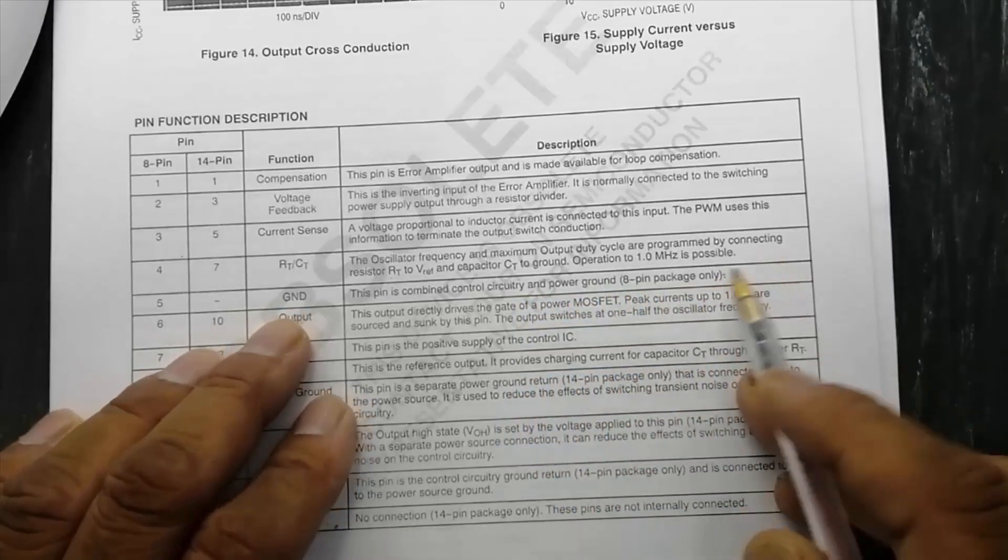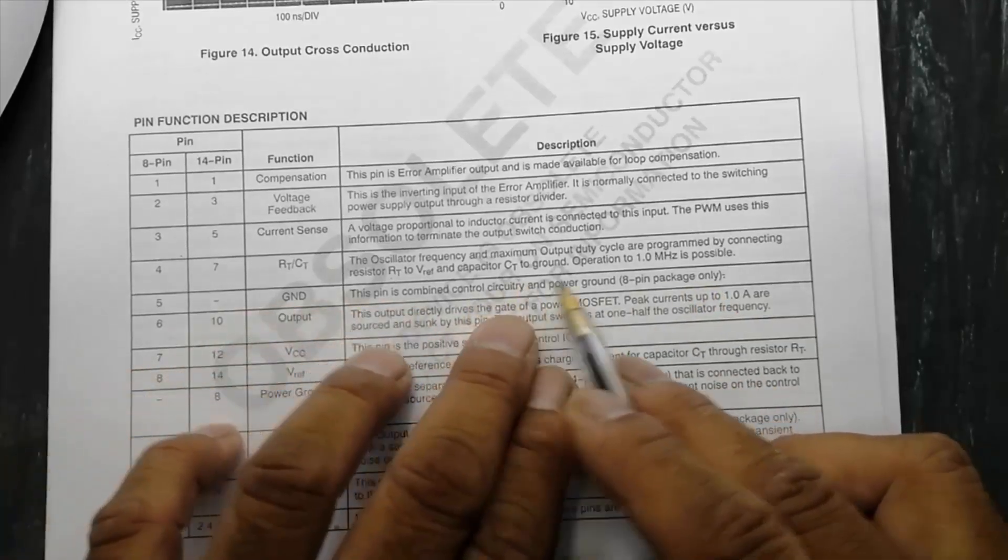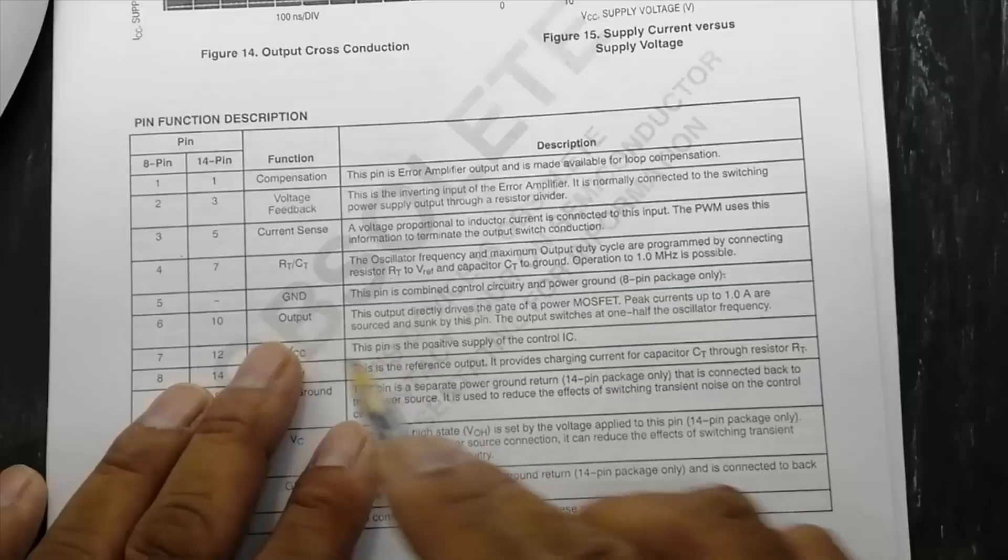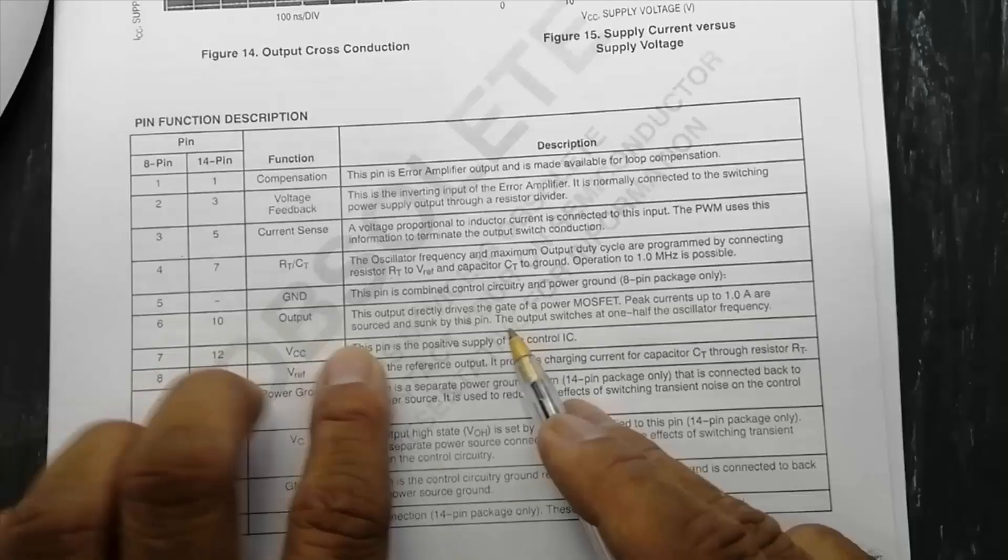For 8-pin IC, it is a signal and power ground. Pin number 6 in 8-pin, pin number 10 in 14-pin is output.